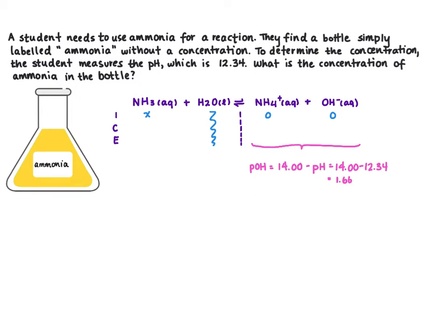Next step is going to be to calculate the OH- concentration from our pOH. So hydroxide concentration will equal 10 to the negative pOH. So 10 to the negative 1.66 and that equals 0.022 moles per liter.